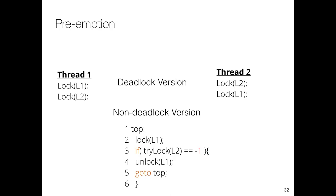Does this trylock approach have any problem? Yes—livelock. If both threads simultaneously acquire their first lock, fail to get the second, and release the first—then repeat—you have a live contention between the locks where neither thread makes progress.